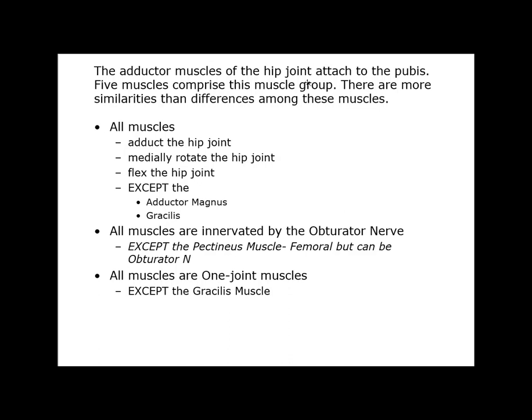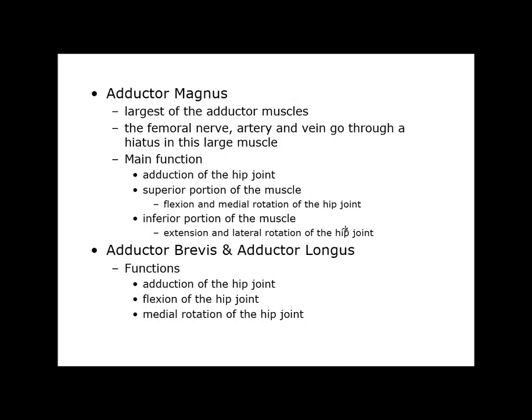Another similarity is that all muscles are one-joint muscles, except the gracilis muscle, which crosses the knee joint. The adductor magnus is the largest. The femoral nerve, artery, and vein go through the hole in this large muscle. Its main function is adduction — the superior portion can flex and medially rotate, and the inferior portion can extend and laterally rotate. This is similar to the trapezius or the deltoid, which also have flexor and extensor portions.